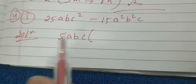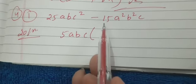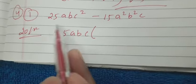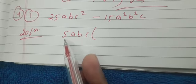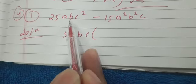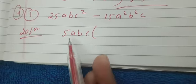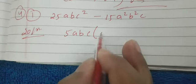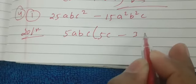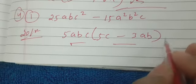Question number 4(i): the expression is 25ABC² minus 15A²B²C. We can see that 25 and 15 are both multiples of 5, so we take 5 as common. We can also take A, B, and one C as common. What is left is 5C and 3AB. So the two factors are 5ABC and (5C - 3AB), and this is the answer to question 4(i).